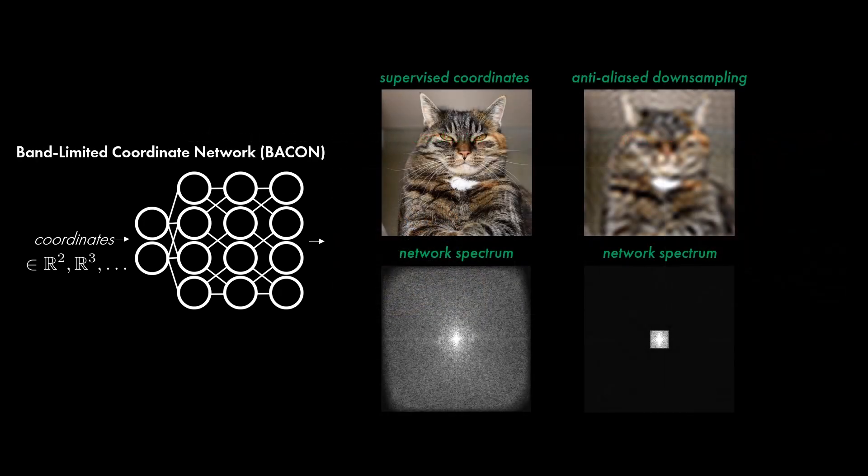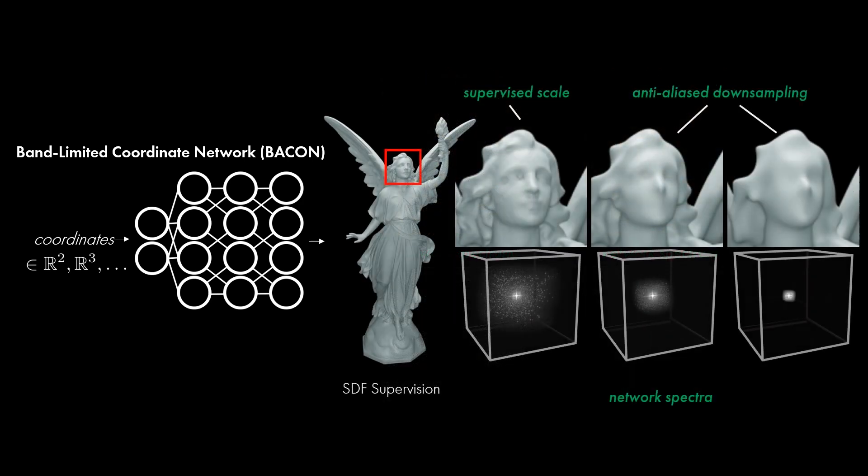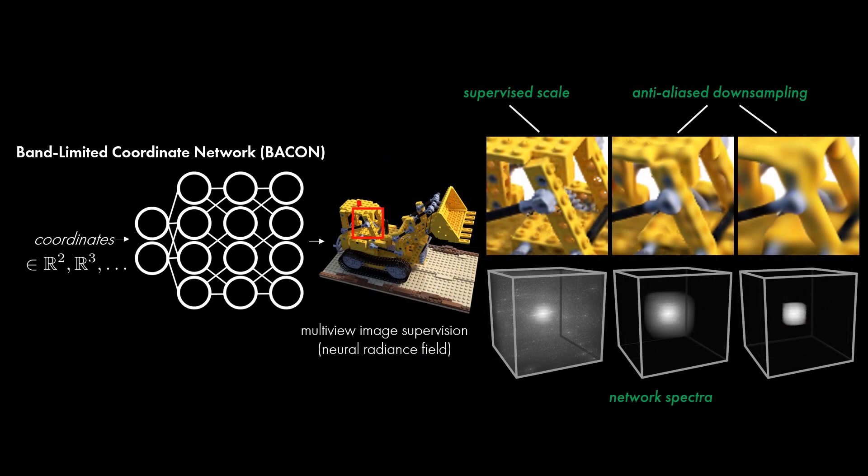We propose Band Limited Coordinate Networks, or BACON, to address these limitations. This architecture has an analytical Fourier spectrum, so its behavior can be characterized even at unsupervised points, and we can constrain the outputs of the network to desired resolution scales.